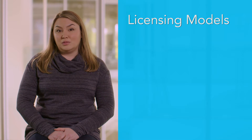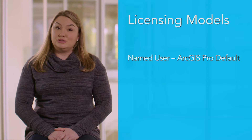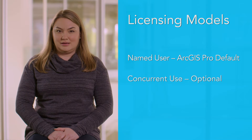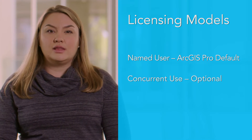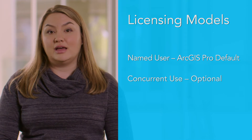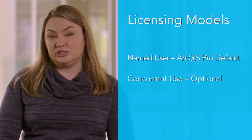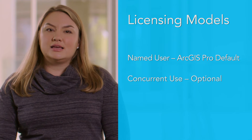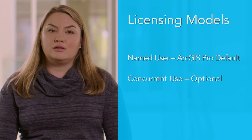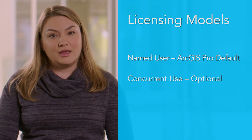There are two licensing models available for ArcGIS Pro: named user and concurrent use. With ArcGIS Pro, the default license model authenticates the software via named users managed through ArcGIS Online. These licenses follow a user identity model which works well with the rest of the ArcGIS platform. However, the concurrent use option might be a good fit for you if your organization already manages ArcGIS for Desktop licenses via license manager or if you have security or firewall requirements.